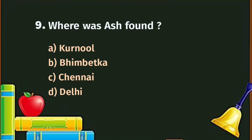Question number 9. Where was ash found? A. Kurnul, B. Bhimbetka, C. Chennai, D. Delhi. The correct answer is A - Kurnul. Kurnul is a cave in Andhra Pradesh where ash was found, which indicates that early humans used fire at that time.